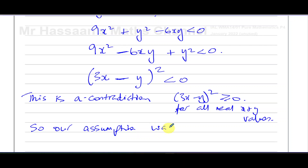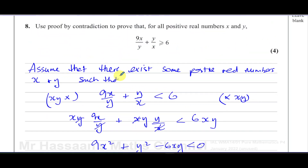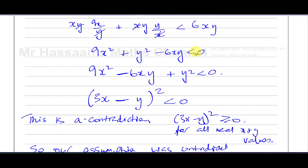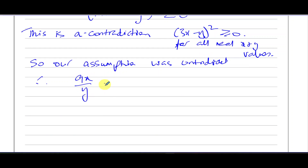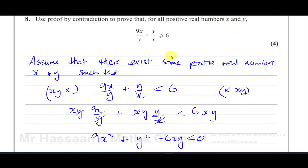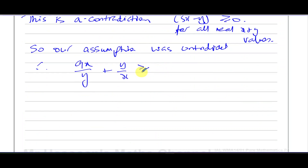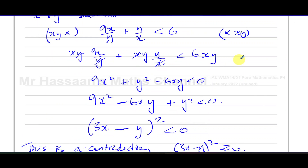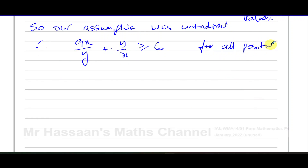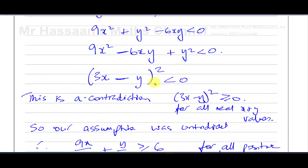Our assumption has been contradicted. Therefore, the original statement is true: 9x/y + y/x ≥ 6 must hold for all positive real numbers x and y.